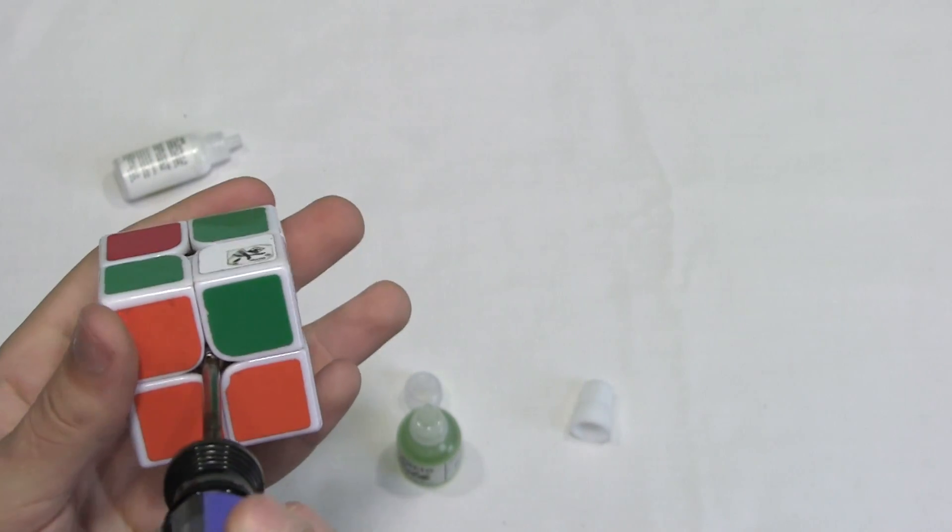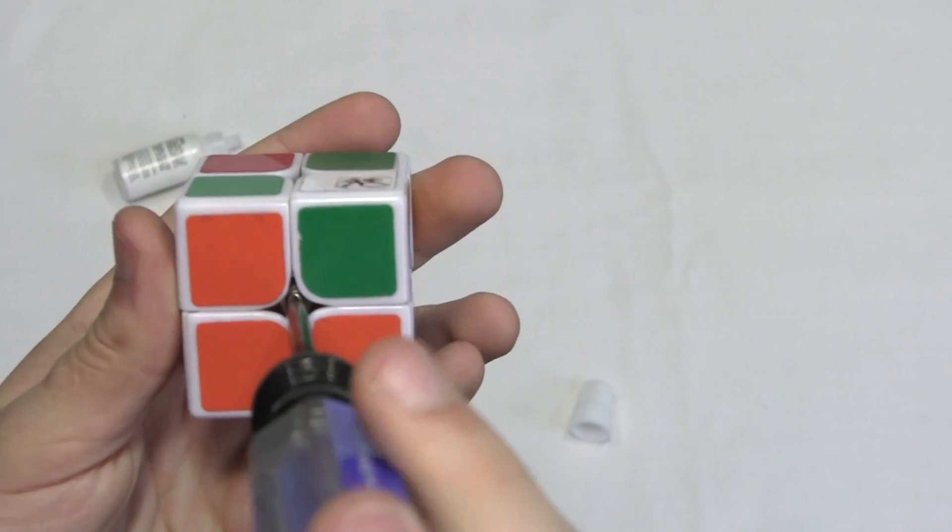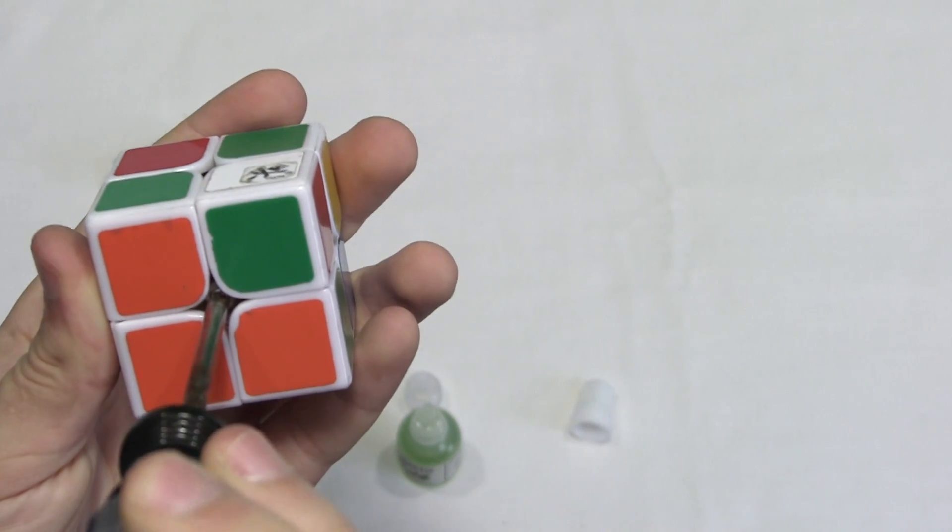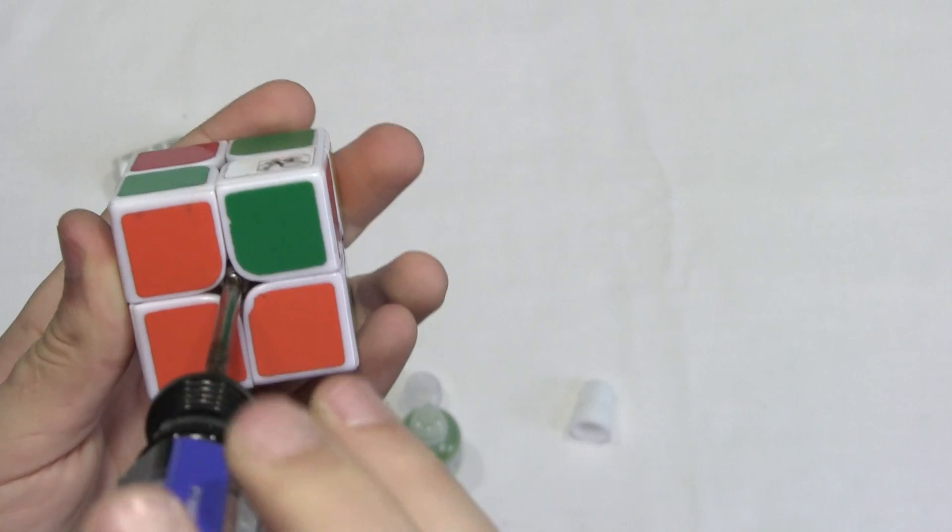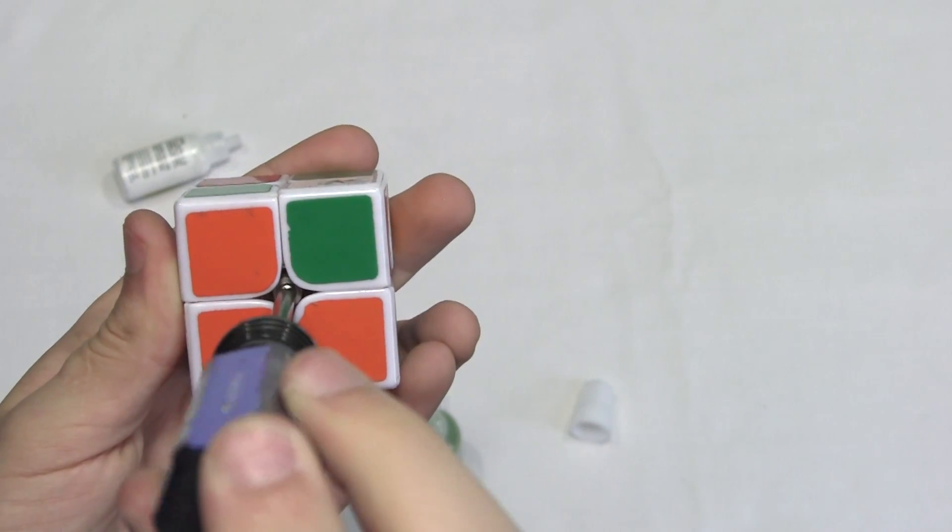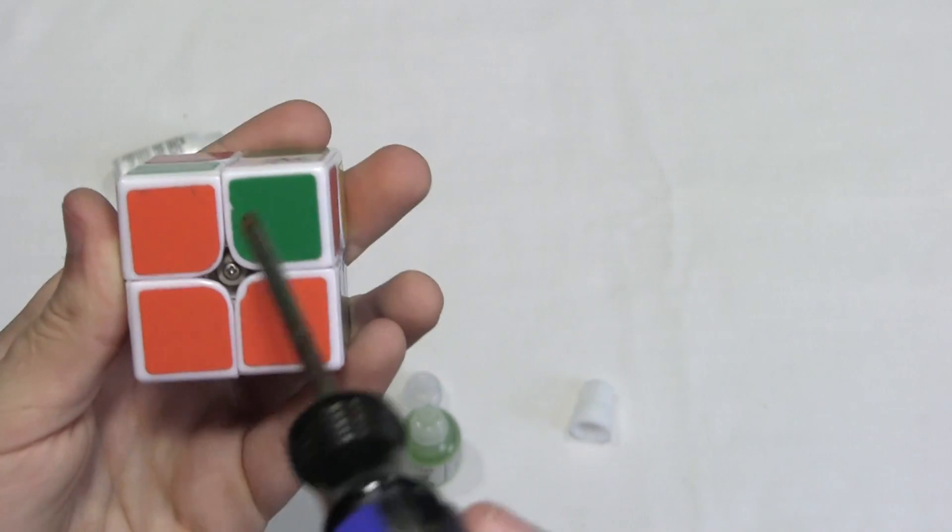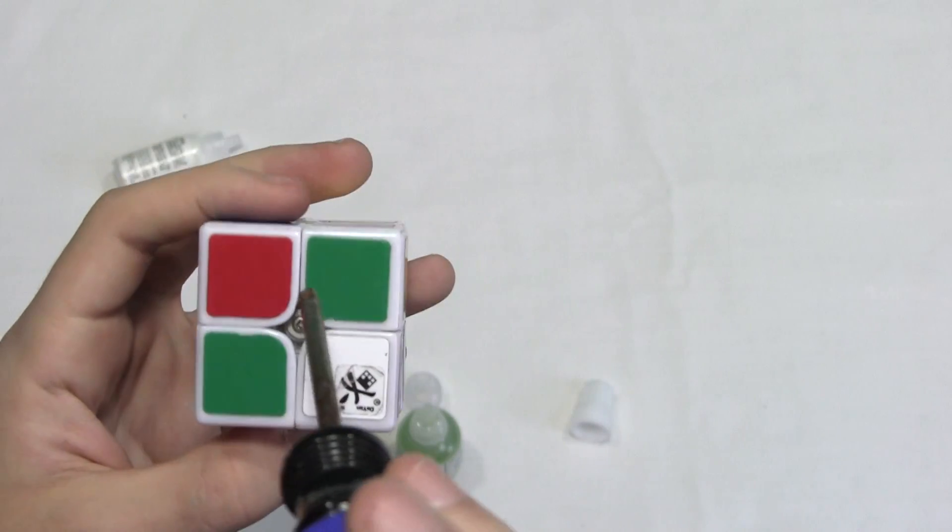But when you tension it, just do like a quarter of a turn. Just like that. Just a little bit. And then do it on every side.